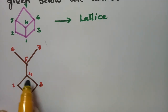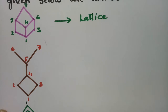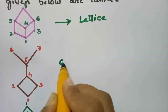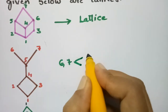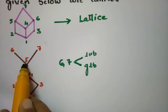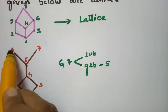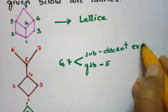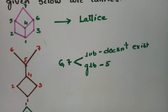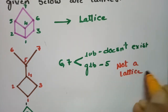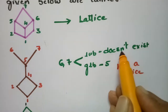Coming to the second figure, the elements are 1, 2, 3, 4, 5, 6, and 7. Any pair of elements should have a greatest lower bound and a least upper bound. If I consider the elements (6, 7), the greatest lower bound is 5. However, for (6, 7) the least upper bound does not exist. Since the least upper bound doesn't exist, the poset represented by this Hasse diagram is not a lattice.